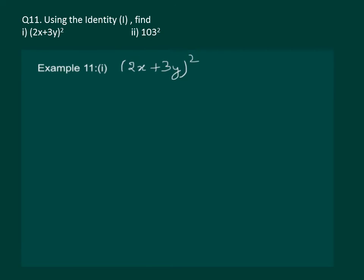Let's start with example 11 first part. We have to find the square of (2x+3y). So firstly let us see if we have any identity that can match with this expression. We can see that we have (a+b)² = a² + 2ab + b². That is our identity number 1.